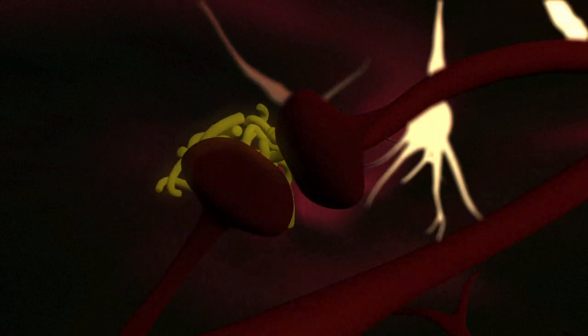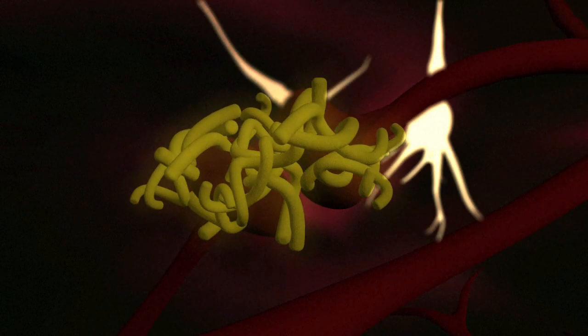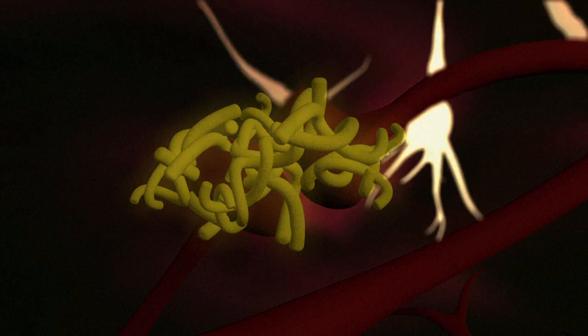A second type of abnormal structure is created by the accumulation of beta-amyloid plaques. These form when proteins in brain cells are processed differently, once again blocking communication channels.